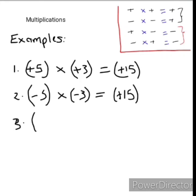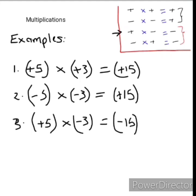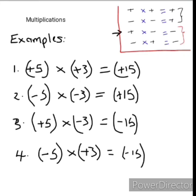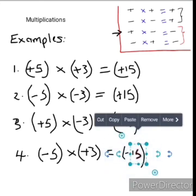Our third example: if we have a positive 5 multiplied by a negative 3, according to rule number three, a positive number multiplied by a negative number equals a negative number. 5 multiplied by 3 equals 15, so our answer is negative 15. Example 4: if we have negative 5 multiplied by positive 3, rule number four states that a negative multiplied by a positive equals a negative value, therefore our answer is negative 15.